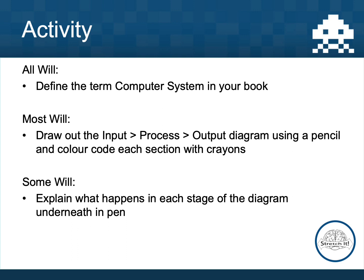Pause the video at this point and do the following three things: find the term computer system in your book — you can flick back through this video if you need. Then draw out the input, process, and output diagram from slide 4 using a pencil and colour code each section. Finally, explain what happens in each section of the diagram underneath in pen. Pause the video, and in a couple of seconds the answer will come up on screen.